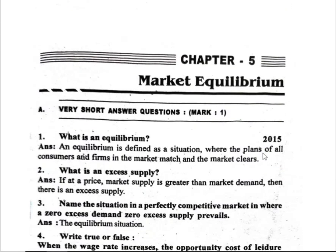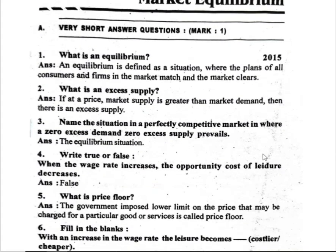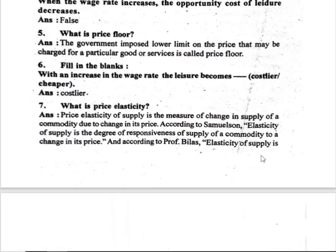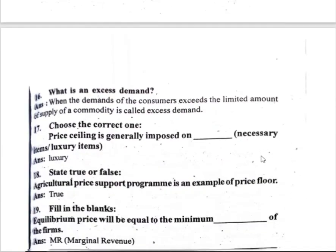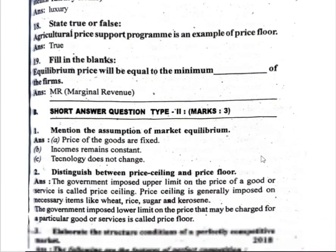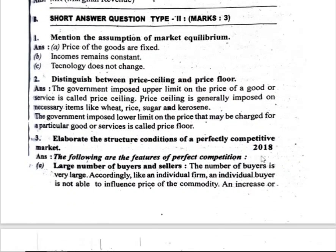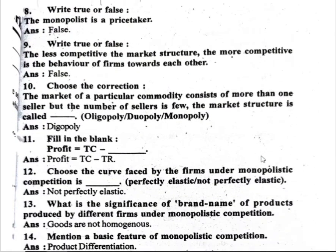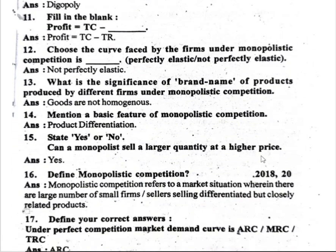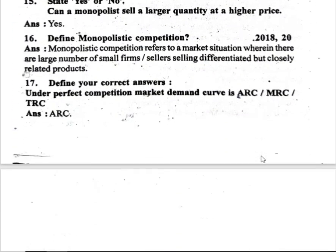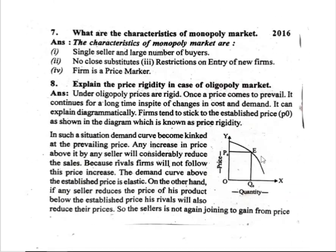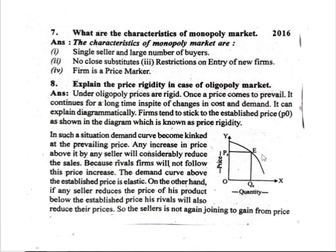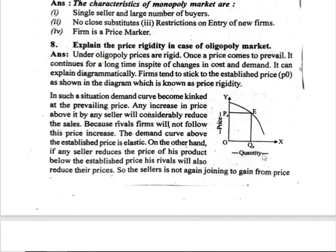Chapter 5: market equilibrium. Questions 1, 2, 3, 4, 5, 6, 7 are important. Questions 16, 17, 18, 19 are noted. Further questions 1, 2, 3, 8, 10, 11, 12, 13, 14, 15, 16, 17, 18 are all important. Questions 7 and 8 are particularly important for this chapter.